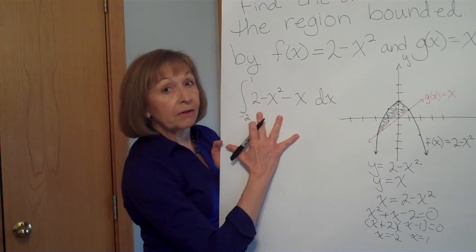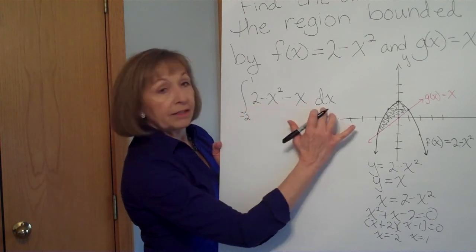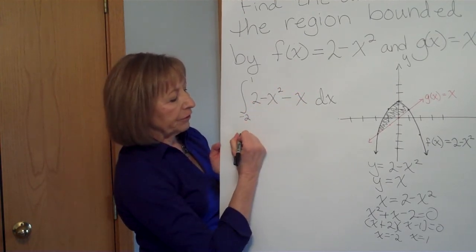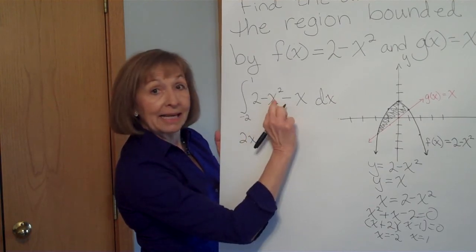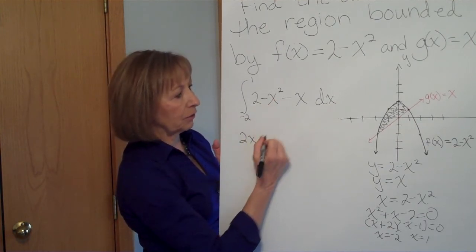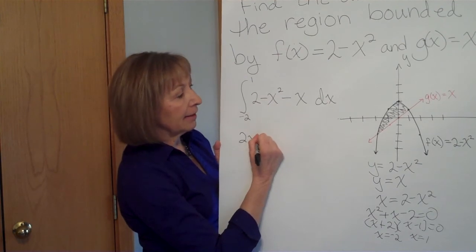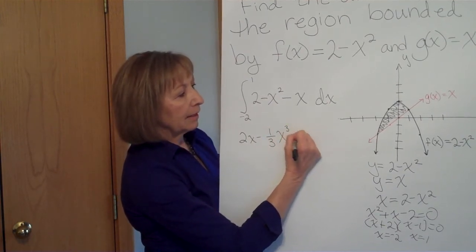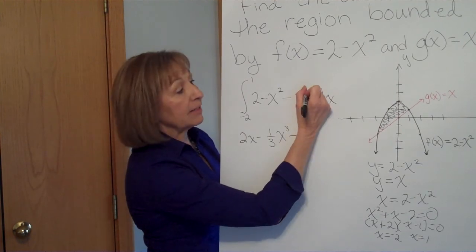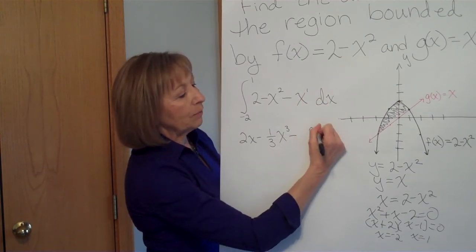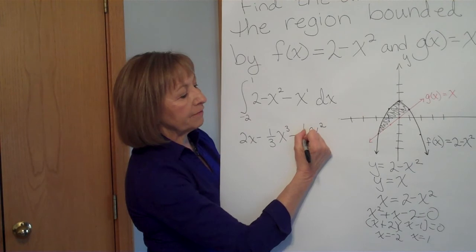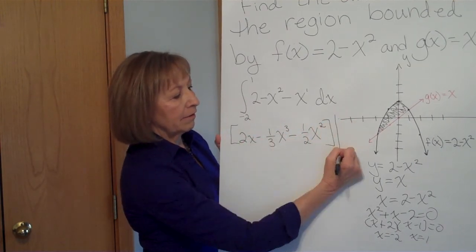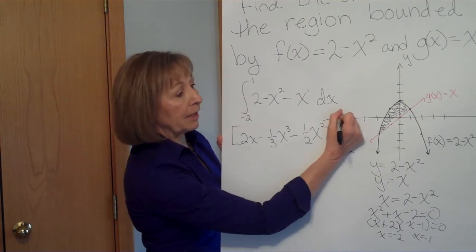Okay, now we're going to use the fundamental theorem of calculus. We're going to find the anti-derivative of the integrand. The anti-derivative of 2 is 2x. The anti-derivative of minus x squared, add 1 to the exponent and divide by that, that's minus 1 third x cubed. And then the anti-derivative of x to the first, add 1 to the exponent and then divide by that. And we're going to evaluate that from an x value of negative 2 to an x value of 1.